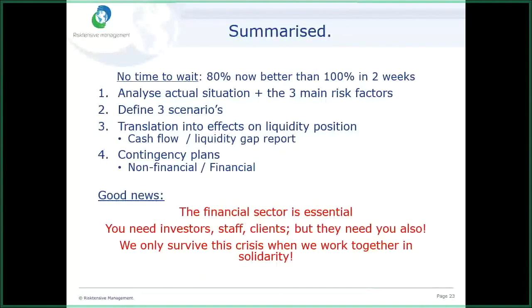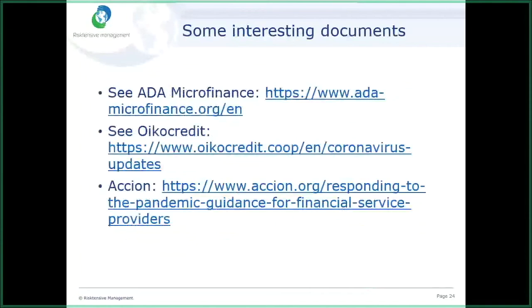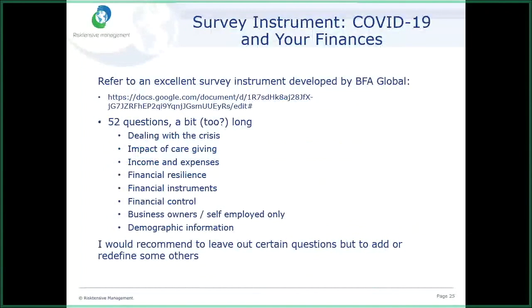In summary: don't wait — analyze your actual situation, define three scenarios from mild to heavy to worst case, translate them into cash flow and liquidity gap impacts, and make contingency plans. Finally, there is an excellent survey instrument developed by BFA Global — I will share the link. It's an excellent way of getting a view on your clients, though it is quite extensive with 52 questions. At least you don't have to reinvent the wheel.